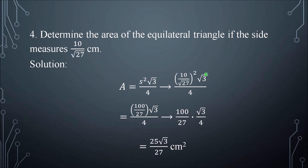10 squared is 100, and (√27)² is 27. So this becomes (100/27) × (√3/4). Multiplying fractions, multiply the numerators and multiply the denominators: 100 × √3 over 27 × 4.